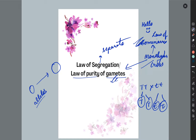This means that in one generation, the characters of the other generation are transferred through alleles via gametes, and they are pure.